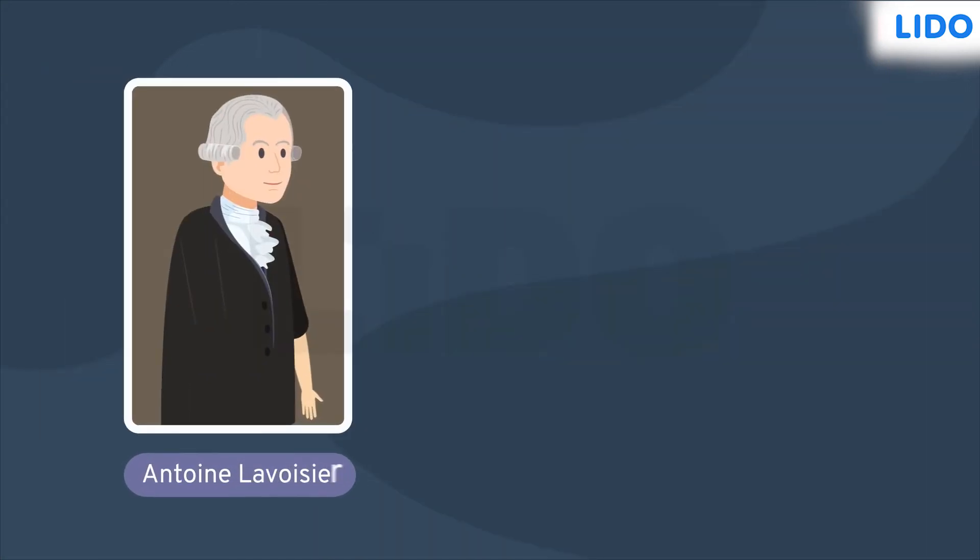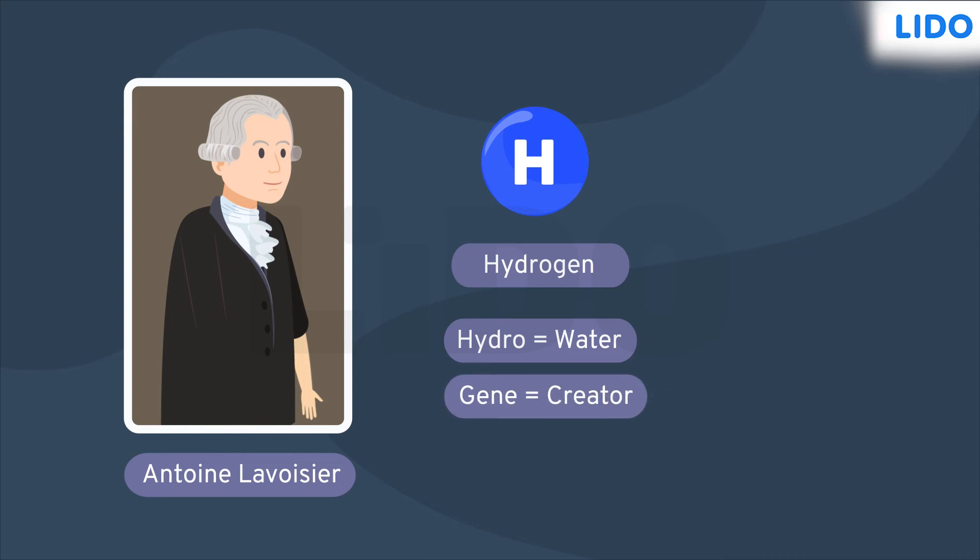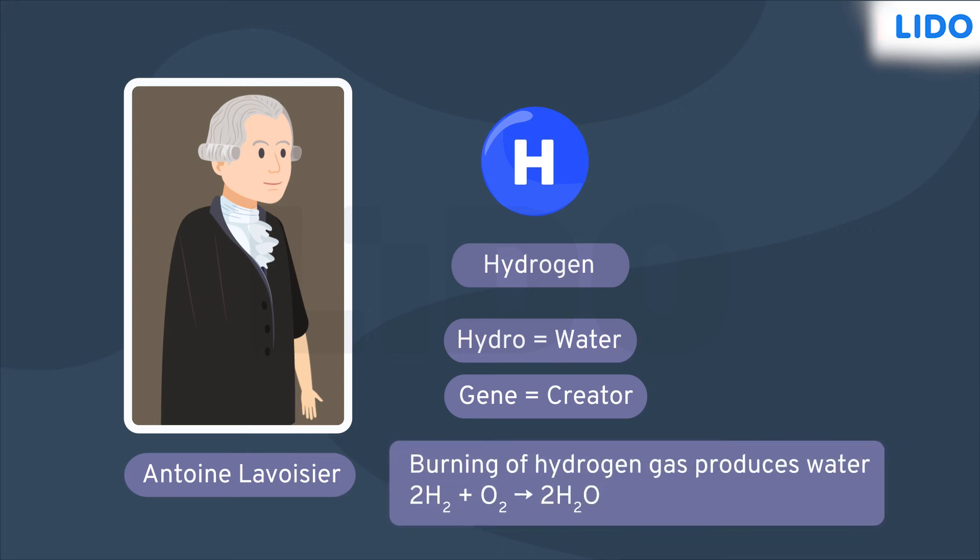A French chemist Antoine Lavoisier gave the name hydrogen. Hydro meaning water and gene meaning creator. The name was given based on the fact that hydrogen creates water when it is burnt.